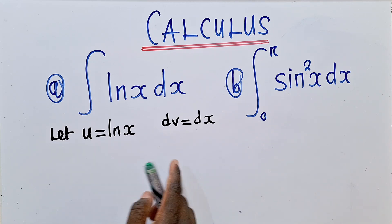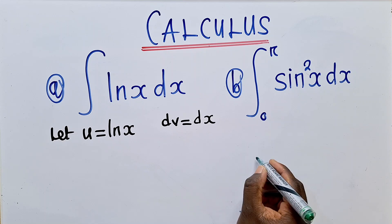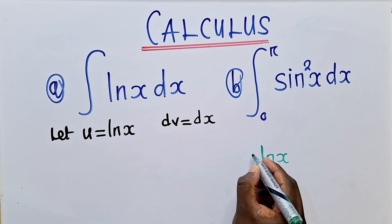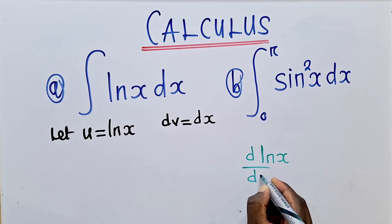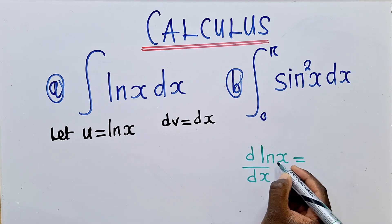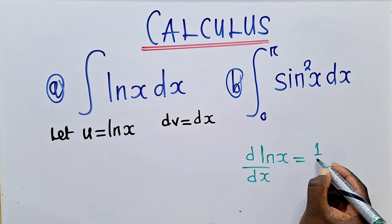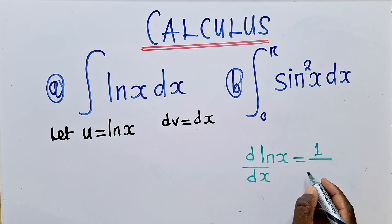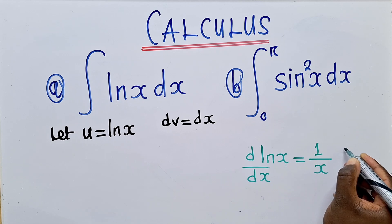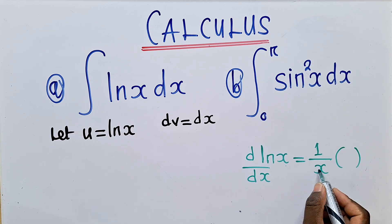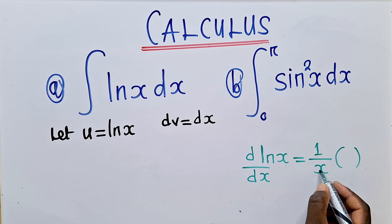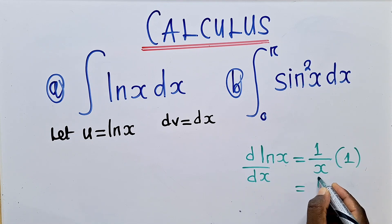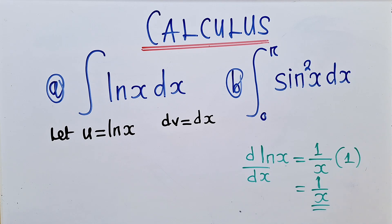Let me just break it down for you right here. When you've got ln x and they want you to find the derivative of ln x — to find the derivative of this, you simply write 1 over x. The 1 is coming from the number that is in front of ln. So that's 1 over x. And then you find the derivative of the denominator — the derivative of x is 1. Therefore, the derivative of ln x is 1 over x.